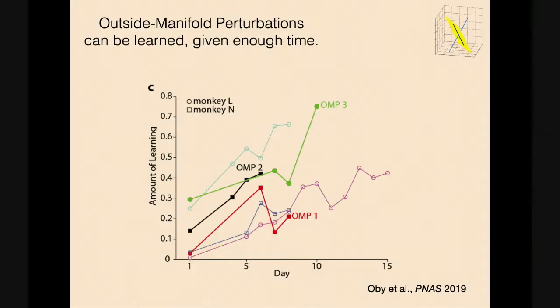We thought about many schemes to facilitate learning, and this is the one we felt best about: Emily takes the goal of learning and divides it into five bite-sized chunks, presents them in sequence to the animal, waits until the animal stably exceeds about 80% correct — the sweet spot for learning — and eventually, in the course of about a week, works the animal all the way around to the full outside-manifold perturbation. After about a good two weeks, performance is kind of back to intuitive mapping levels. By construction, to do this the animal had to forge new correlation patterns among its population activity.